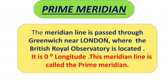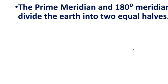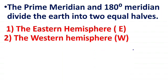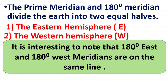This meridian line is known as the prime meridian and its value is zero degrees longitude. The prime meridian — that is the zero meridian — and the 180-degree meridian divide the Earth into two equal halves: the Eastern Hemisphere (E) and the Western Hemisphere (W). It is very interesting to note that 180 degrees East and 180 degrees West meridian lie on the same line.